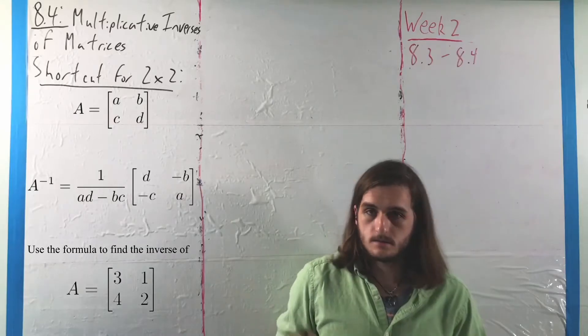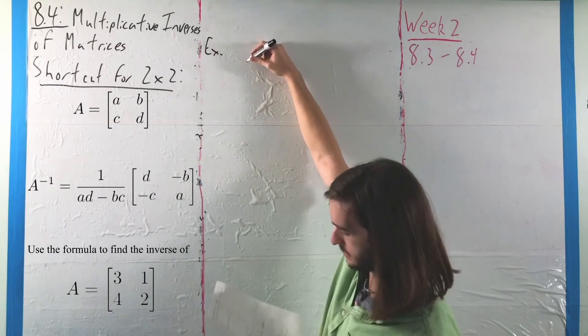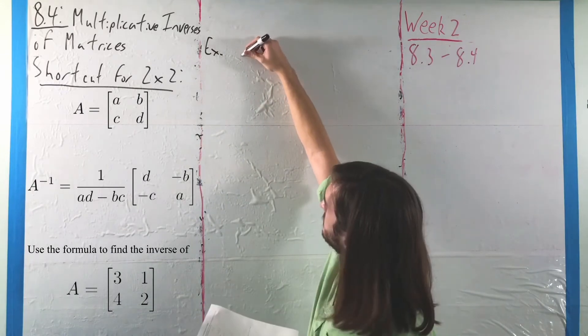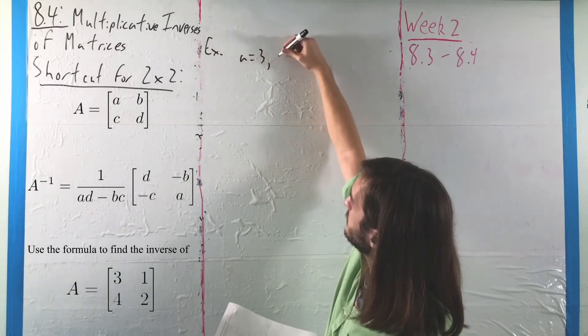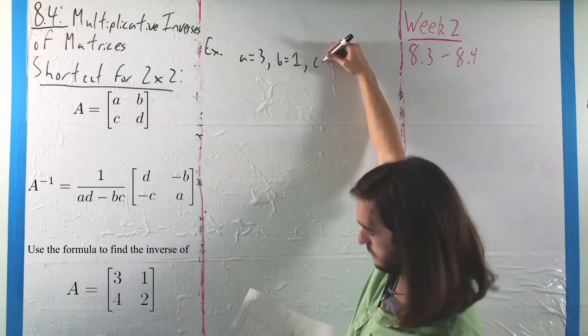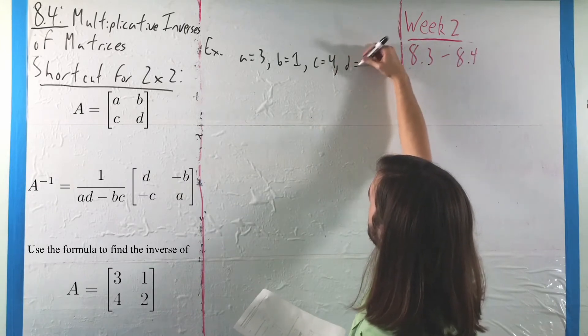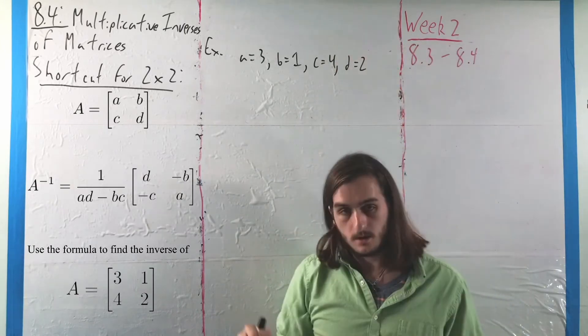in that case, we will end up having that for this matrix, A is equal to 3, B is equal to 1, C is equal to 4, and D is equal to 2.